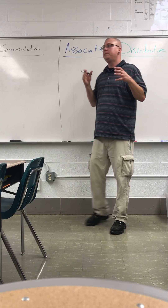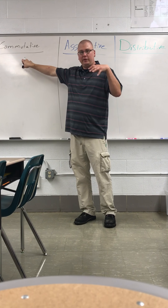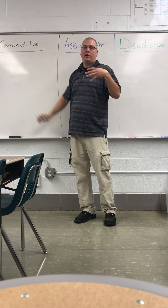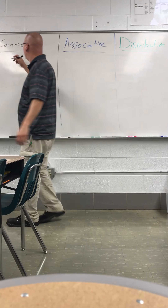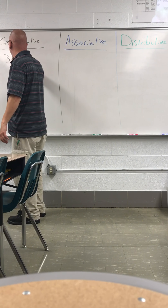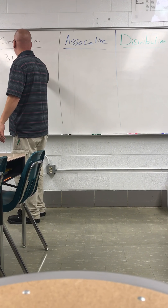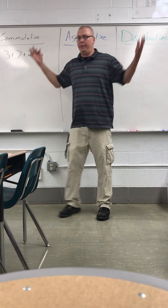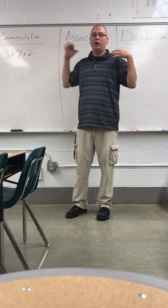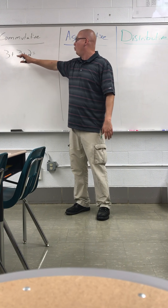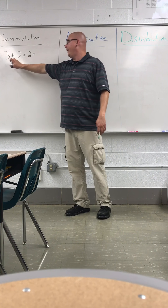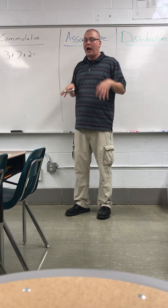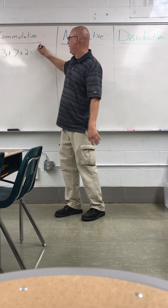The commutative property — think about commuting. If somebody's commuting, it means they're moving from place to place. In a commutative property problem, whether you're adding two things, three things, five things, or a million things together, it doesn't matter. So if I put three things, seven things, and two things together, I'm going to come up with twelve things.